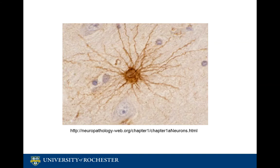Astrocytes have radially arranged processes. Although this is challenging to appreciate on standard H&E sections, here is an example of an astrocyte stained with glial fibrillary acidic protein, or GFAP stain. The GFAP stain highlights the cytoplasm of the astrocyte, which is composed of intermediate filaments. In a mature brain, astrocytes outnumber neurons by 5 to 10 times.